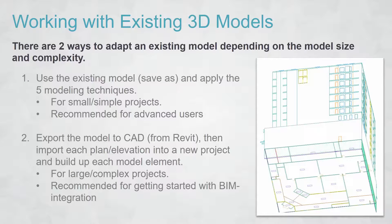If you've got existing 3D models — which is the state for most people — you have these models from your architects and don't know what to do with them. You can use the five modeling techniques to fix up small, simple projects, but I'd only recommend this for advanced users after you've done the whole process once, since it's harder to adapt a model than build from scratch. An easy alternative is to export the model to CAD and build it back up, chiseling out the parts you need to reduce it to something that works.